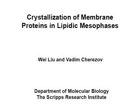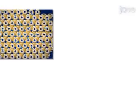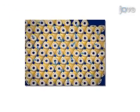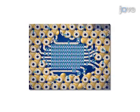The overall goal of the following procedure is to obtain high quality crystals of a membrane protein for structure determination by X-ray crystallography. This is achieved by protein reconstitution into the membrane of a lipidic cubic phase and incubation with a precipitant solution, which induces crystal nucleation and growth.